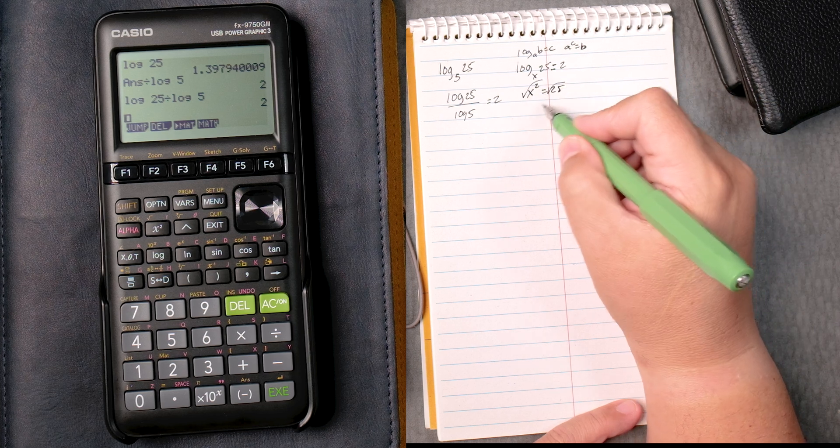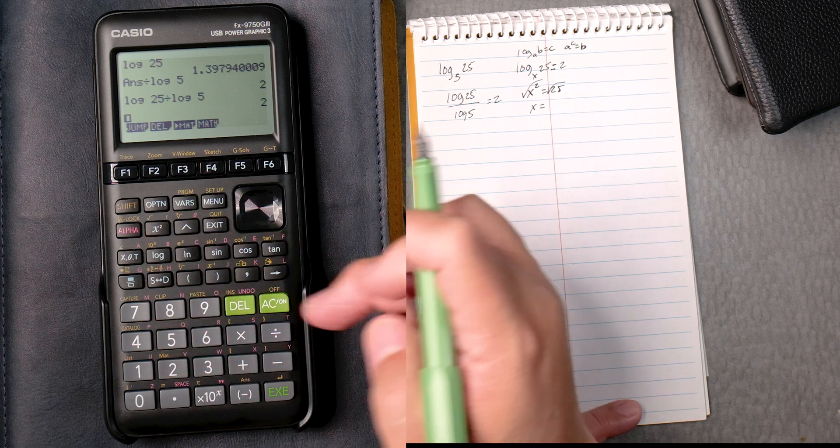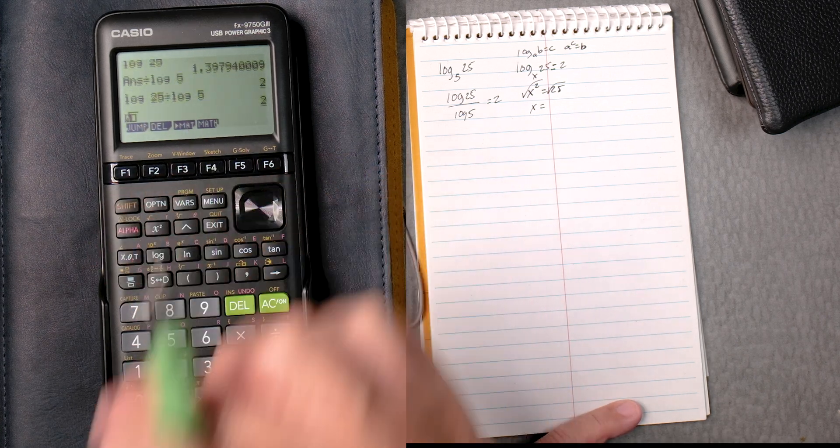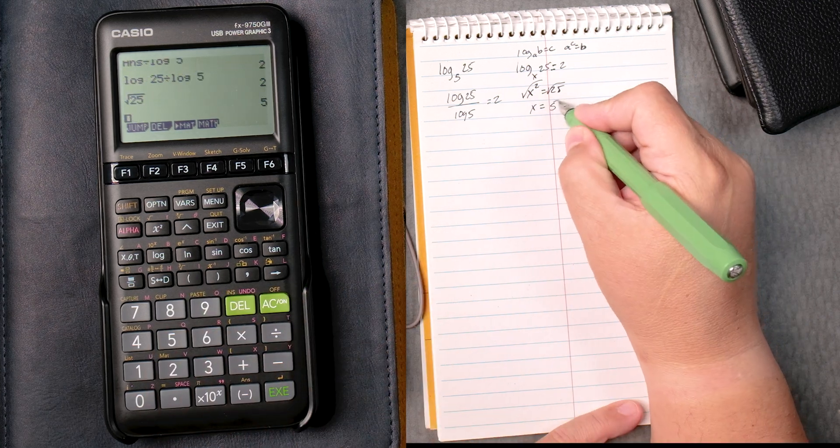x to the 2 equals 25. Take the square root on both sides, x equals the square root of 25. So it's in yellow, so shift, square root of 25, enter, gives you 5. I think we knew that.